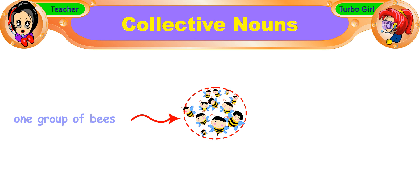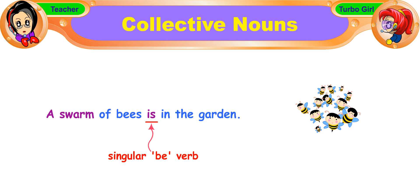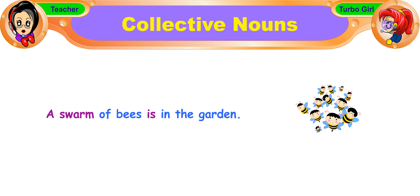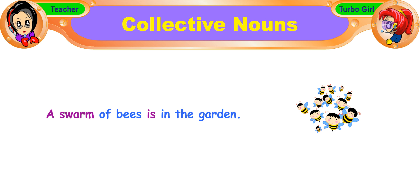When we are referring to one group of bees, we say: a swarm of bees is in the garden. We use the singular be verb 'is' to refer to one swarm of bees. Even though there are many bees, we are still referring to one group or a swarm of bees, so we use 'is'.